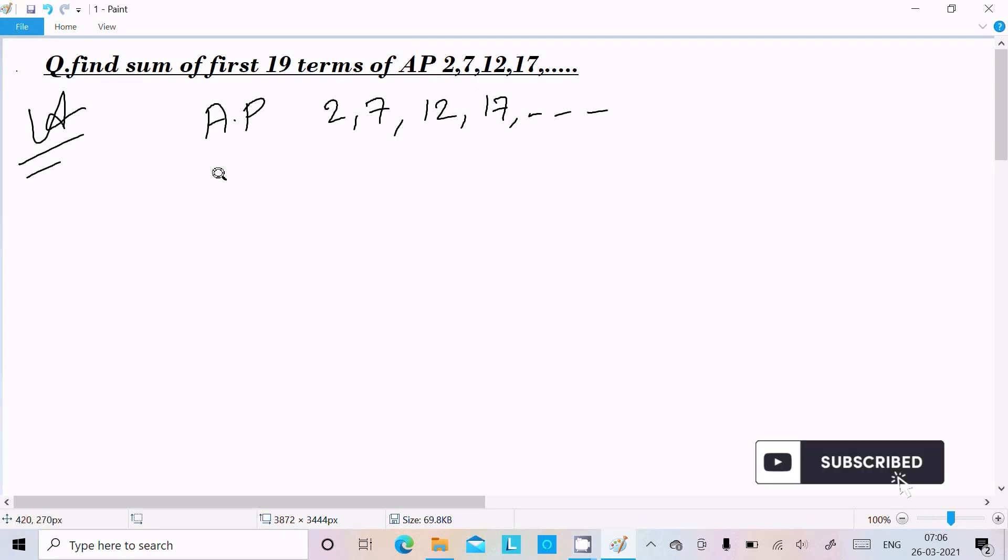Now here first we need to identify the first term, so a is the first term which is 2. And here common difference, so second term minus first term, so 7 minus 2, that comes 5. So this is the formula for common difference: a_n minus a_{n-1}.